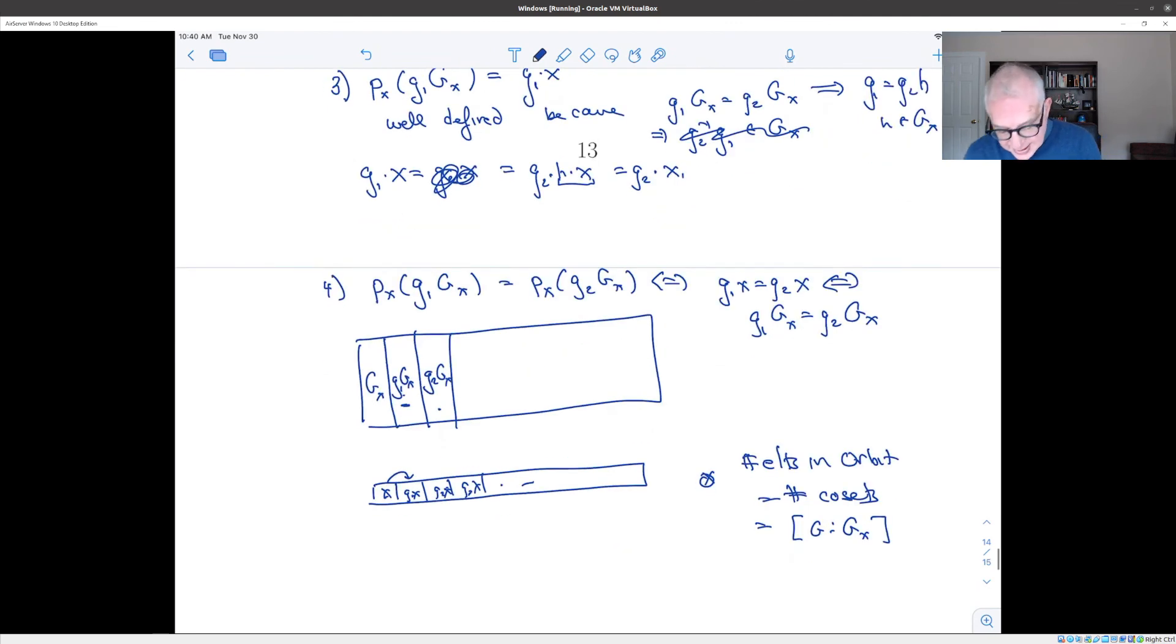And of course, one corollary is that the size of the orbit, if G is finite, then the size of the orbit of x is a divisor of the order of G, because it's the index of a subgroup, which by Lagrange's theorem is always a divisor of the order of G.